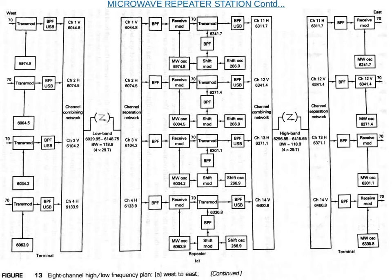Next, we use high-low frequency planning as an example with a two-way communication system. This figure shows the west-to-east direction case with a high-low frequency plan with eight channels — four high band and four low band. Each channel occupies a 29.7 MHz bandwidth. The west terminal transmits the low band frequencies and receives the high band frequencies.